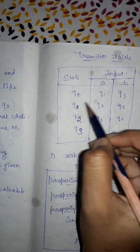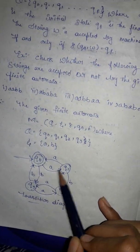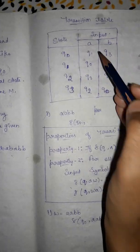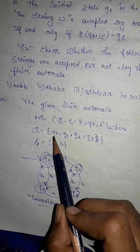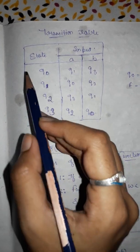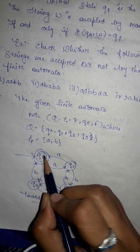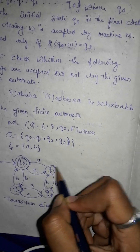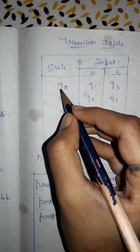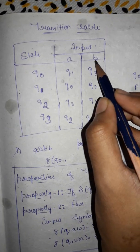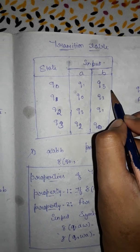Now coming to the transition table: the states are q0, q1, q2, q3. The inputs are a and b. For q0 on input a, we go to q1. For q0 on input b, we go to q3. For q1 on input a, we go to q0. For q1 on input b, we go to q2.